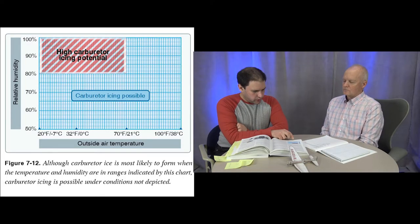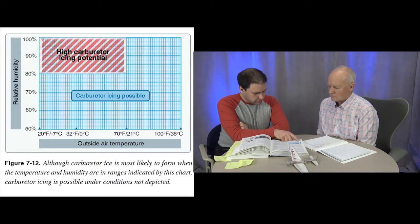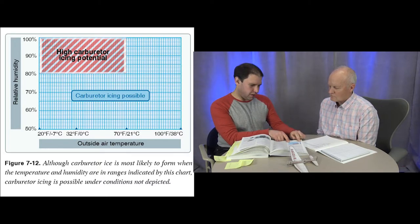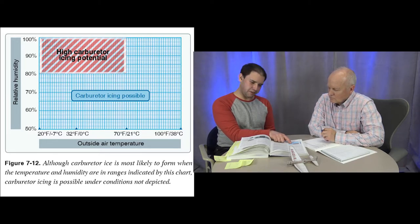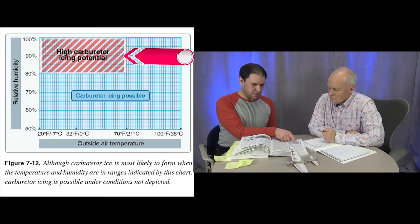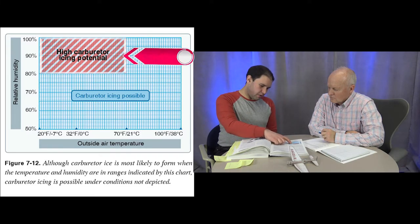Figure 7-12 shows a chart of outside air temperature from 20 to 100 degrees Fahrenheit versus relative humidity. Carburetor icing is most likely above 80% humidity and below 70 degrees Fahrenheit. That means spring and into summer — April, May, June into July — are when you have the most chance of carburetor icing in this region.